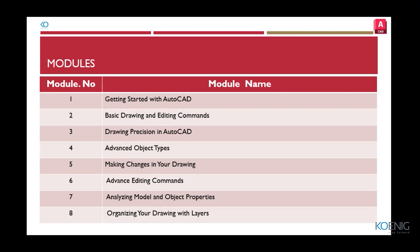Firstly, you will become familiar with the AutoCAD user interface, including the ribbon toolbar, command line, tool palettes, and navigation tools. You will learn how to create and modify different types of objects such as lines, circles, arcs, polygons, and splines. You will also explore editing commands including move, copy, rotate, scale, mirror, fillets, chamfers, extend, group, and ungroup.